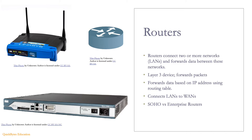Routers connect your home's private internal network to the public internet, or a business's intranet to the public internet. There are many types of routers, such as small office home office routers like Linksys — small routers you can buy from an electronics store. Enterprise routers are larger, more powerful, contain more features, and are more expensive. You won't find these in your local electronics store.